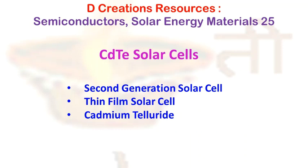A conductive sheet is used in order to allow the electricity to flow between solar cells, for increasing the voltage, and for allowing the connection of CdTe panels into PV systems. These layers require the deposition of a metal layer or carbon paste, and producing copper to create conduction in the panel.